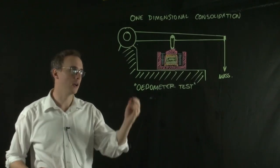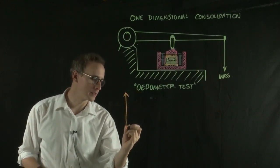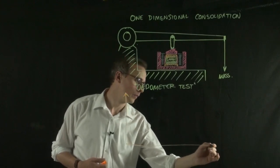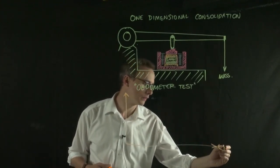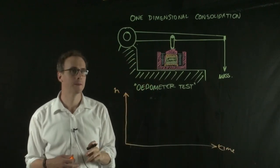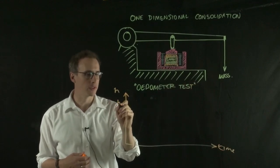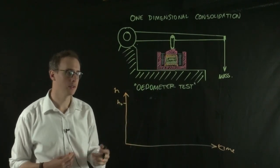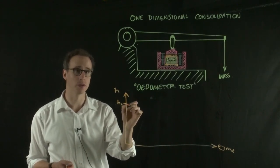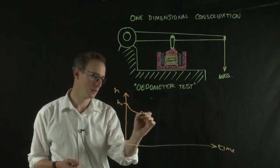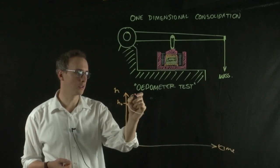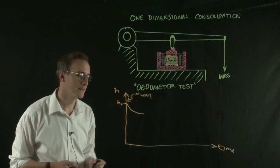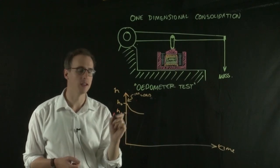We place our sample into the loading frame and we know the initial thickness of that sample, so we can plot a graph over time of how that sample thickness changes as we load our sample. We can draw a graph with time and sample thickness, showing an initial sample thickness that we know. We stick a mass onto the end of the loading arm and measure the displacement of the lid with a displacement transducer. What will happen is the sample thickness will decrease over time. We apply our first load and the sample thickness will decrease, and eventually it will stop decreasing. We measure the thickness of the sample at that point.